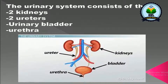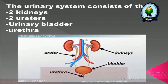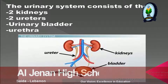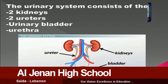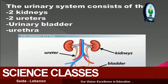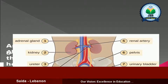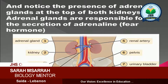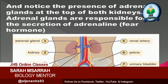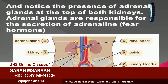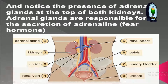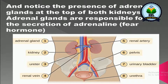The urinary system consists of two kidneys, two ureters, the urinary bladder, and the urethra. Notice the presence of adrenal glands at the top of both kidneys. The adrenal glands are responsible for the secretion of adrenaline, which is the fear hormone.